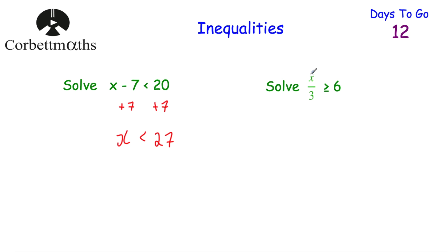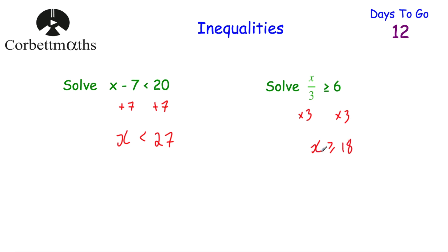Our next inequality: solve x over 3 is greater than or equal to 6. We don't want the divided by 3 on the left-hand side, so we're going to multiply both sides by 3. x divided by 3 times 3 leaves us with just x, then we keep our greater than or equal to symbol, and 6 times 3 is 18. So x is greater than or equal to 18.